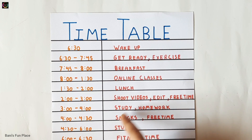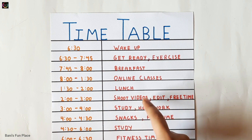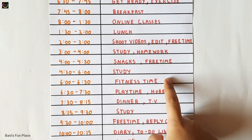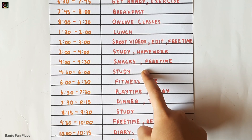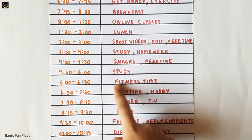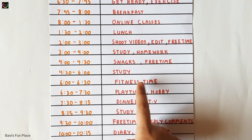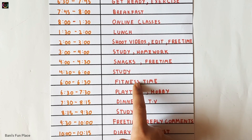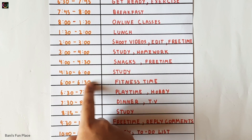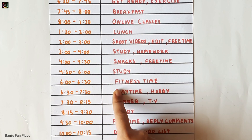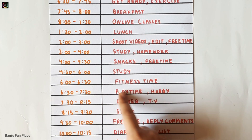The 4:30 to 6 o'clock session is a long study session. After I'm done studying it's my fitness time. Nowadays it's really important to exercise because we need to be physically fit too, since we don't go out much. So I have my fitness time for half an hour.